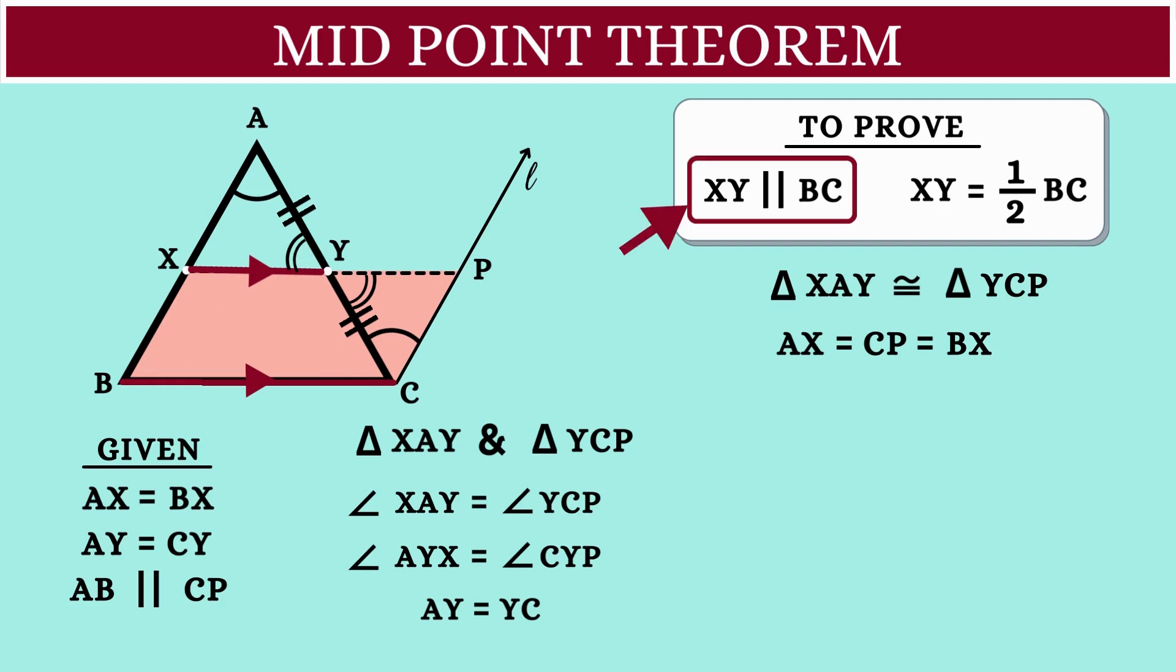Now, coming to our congruent triangles again, the corresponding sides XY is equal to YP.